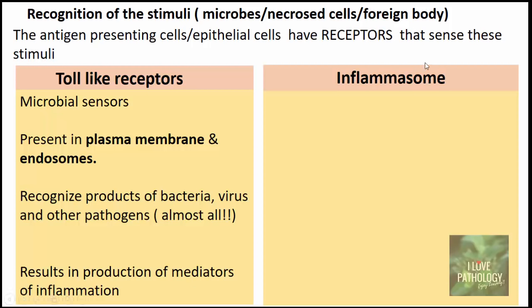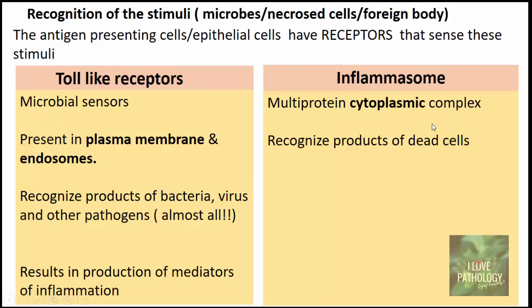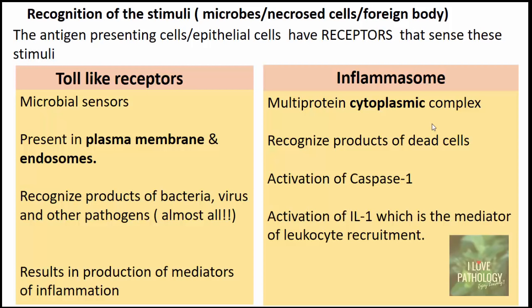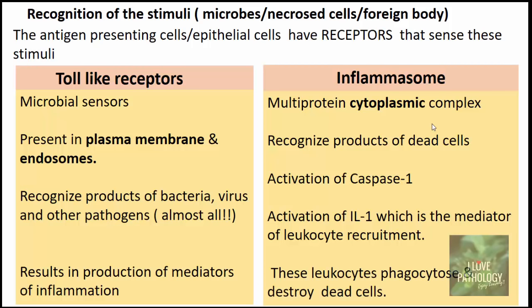The second important receptor is the inflammasome, a multi-protein cytoplasmic complex that recognizes products of dead cells. Once exposed to these products, inflammasomes activate caspase-1, which in turn activates interleukin-1 — one of the most important mediators for leukocyte recruitment. The recruited leukocytes then phagocytose and destroy the dead cells. Toll-like receptors and inflammasomes are the most important receptors for tissue to recognize invaders.